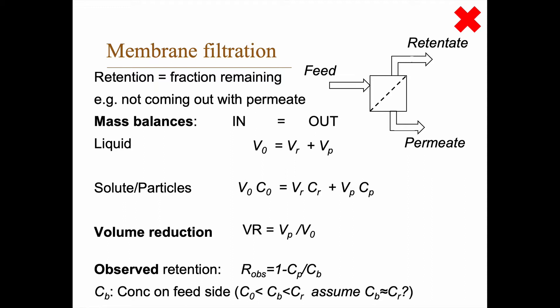We have now a new thing here. Cb doesn't appear up here, right? You have C₀, Cr, and Cp there. Well, what's Cb? Cb is the concentration on the feed side. The feed side here might actually vary along the membrane. So what we know is that Cb is somewhere between C₀ and Cr.